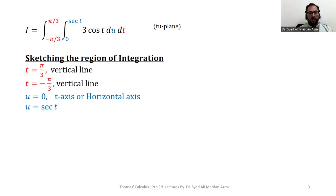And u equals sec(t) is a general curve whose graph looks like this. Please note that this is a graph of sec(t), where u is our vertical axis and t is our horizontal axis.